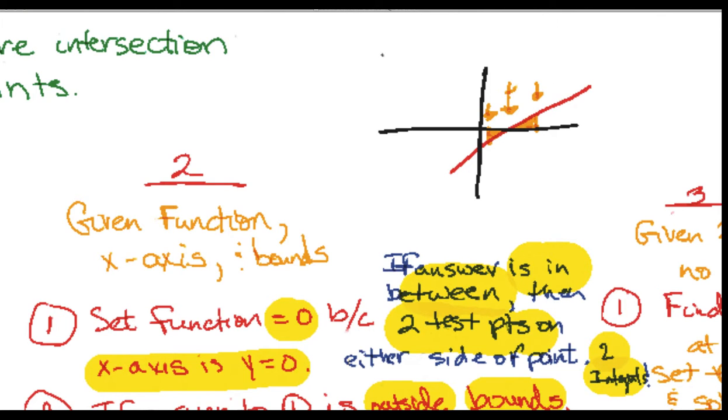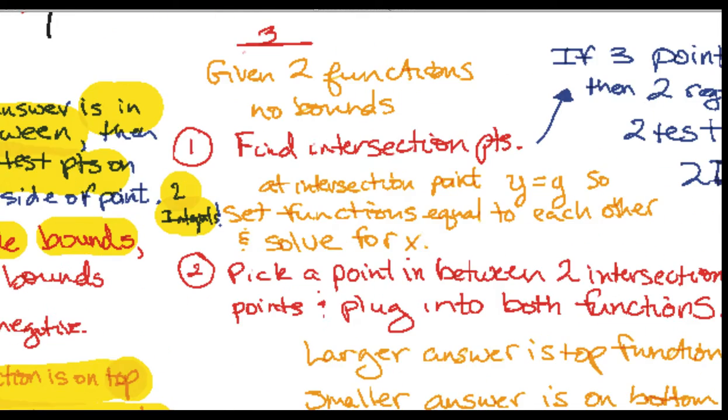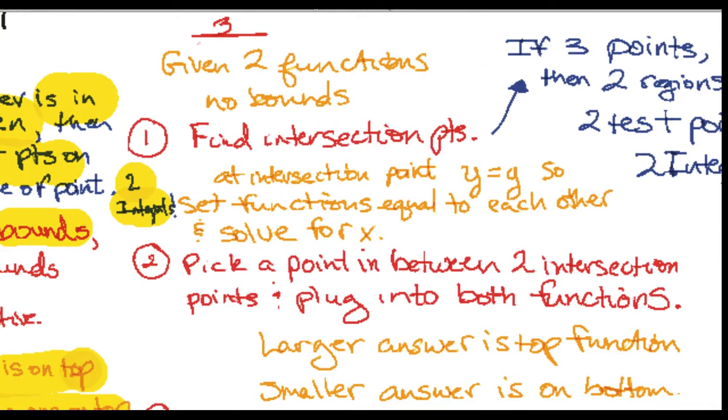All right, and then the final scenario is you're just given two functions and no bounds. What do we do there? Well, we got to find the intersection points, so we know that at an intersection point y must equal y. So what you do is you set the two functions equal to each other. It's also what we did in the last scenario, but one of the functions was the x-axis so it was zero. That's why it was y equals zero. But here we're going to have two distinct functions, so we set them equal to each other and we solve for x.